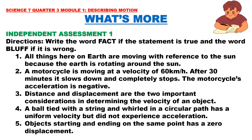Independent Assessment 1: Write the word 'fact' if the statement is true and 'bluff' if it is wrong. 1. All things on earth are moving with reference to the sun because the earth is rotating around the sun. 2. A motorcycle moving at 60 km/h slows down and stops after 30 minutes — the motorcycle's acceleration is negative. 3. Distance and displacement are the two important considerations in determining the velocity of an object. 4. A ball tied with a string and swirled in a circular path has uniform velocity but did not experience acceleration. 5. Objects starting and ending on the same point have zero displacement.